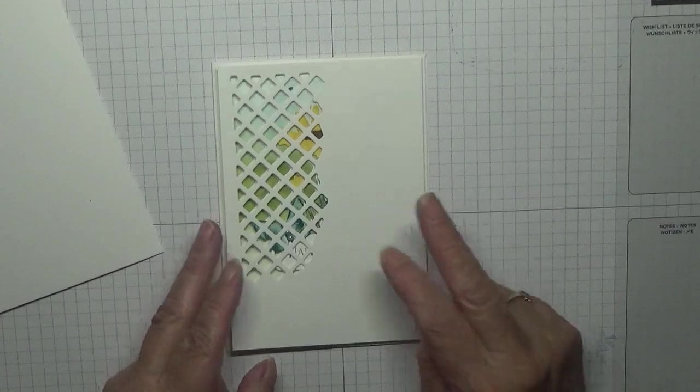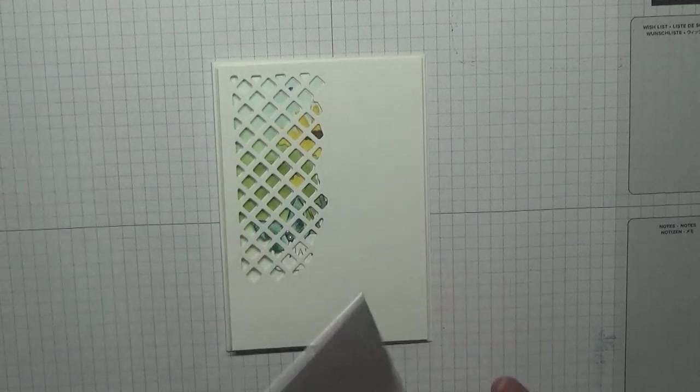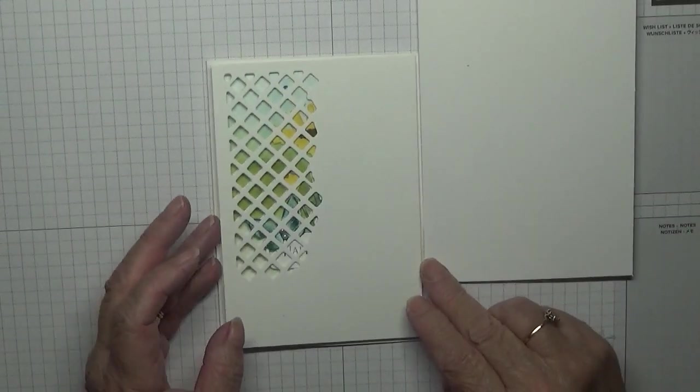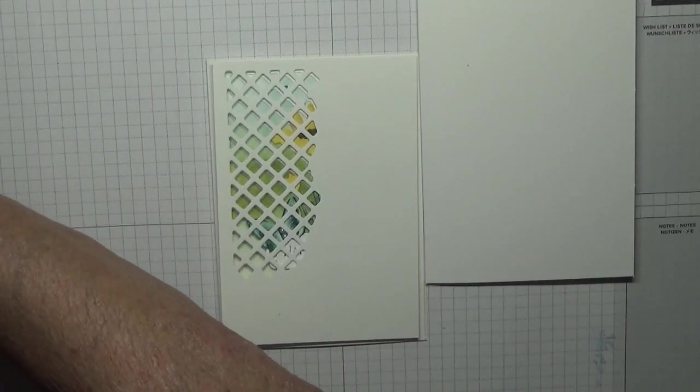I've also got a card base of eight and a quarter by five and seven-eighths scored at four and one-eighth. I've also got a piece for the inside.